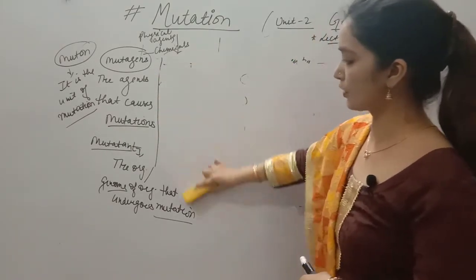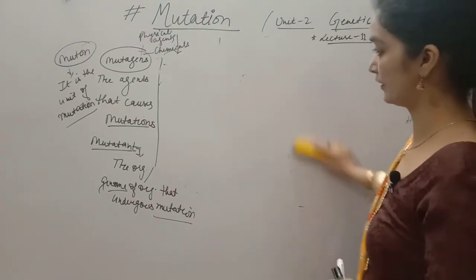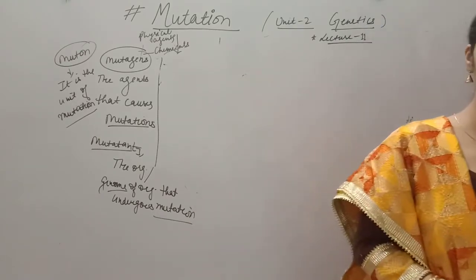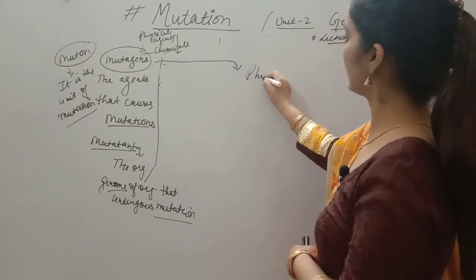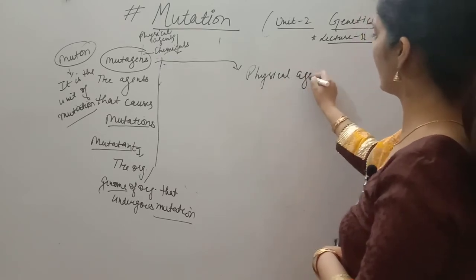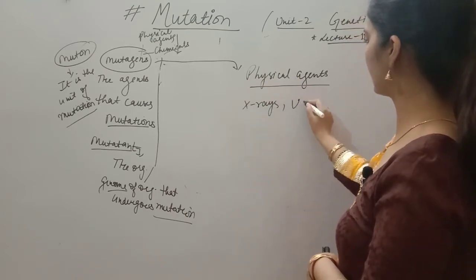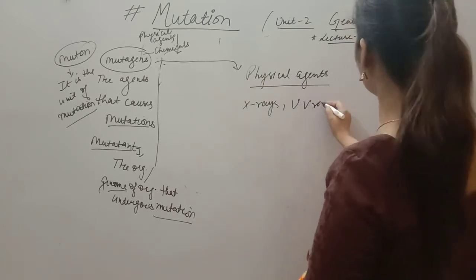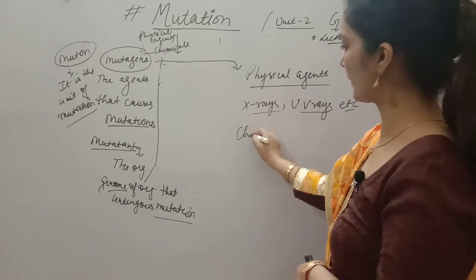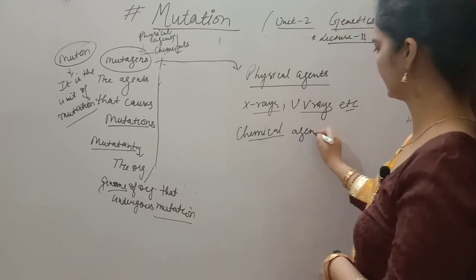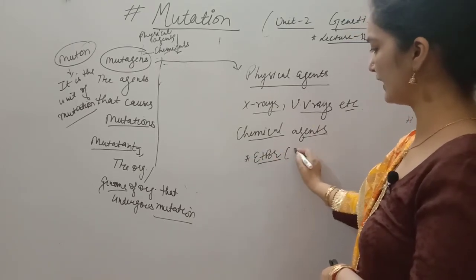Rays like UV rays and X-rays that can penetrate the body may be a cause of mutation — these are called physical agents. Physical agents include X-rays, UV rays, gamma rays, etc. Chemical agents also cause mutation, for example EtBr — ethidium bromide.